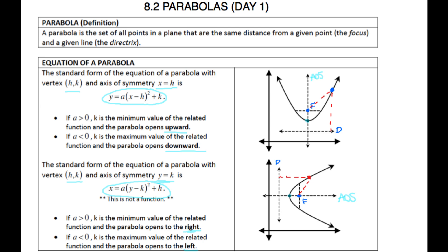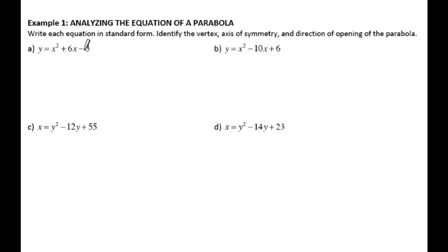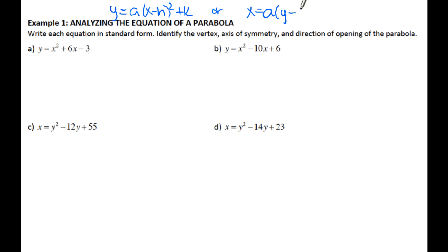For this lesson, you've actually already seen this before with chapter six — changing to vertex form — so hopefully it's a review. We want to change equations to the form Y equals A times (X minus H) squared plus K, or X equals A times (Y minus K) squared plus H. We need to have a perfect square, so the way we do that is by completing the square.